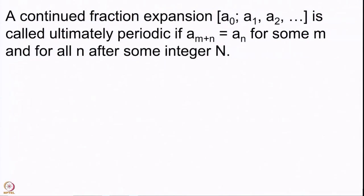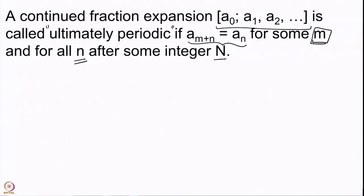The continued fraction expansion is given in terms of a₀, a₁, a₂ and so on. This is called ultimately periodic if a_{m+n} = a_n for some fixed m and for all n after some integer N. So we have the integers a₀, a₁, a₂, and so on, up to a_N.